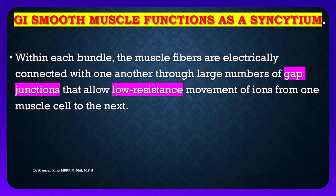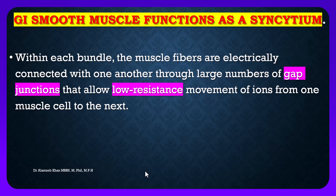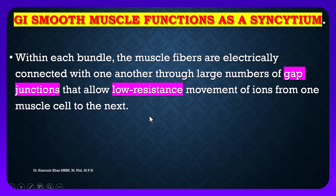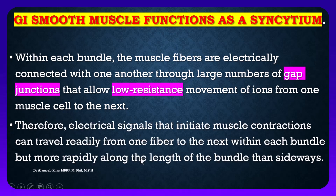Within each bundle, the muscle fibers are electrically connected with one another through a large number of gap junctions. Gap junctions allow low-resistance movement of ions from one muscle cell to the next. Therefore, electrical signals that initiate muscle contraction can travel rapidly from one fiber to the next within each bundle, but more rapidly along the length of the bundle than sideways.